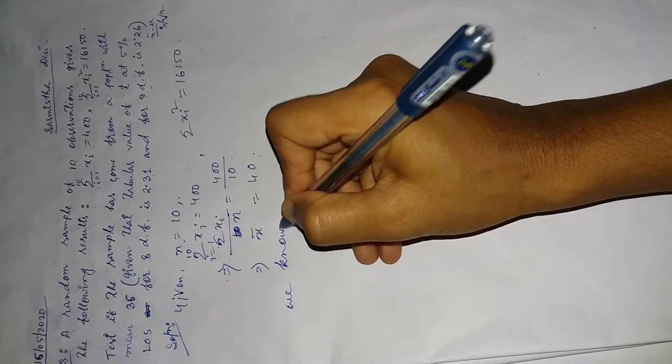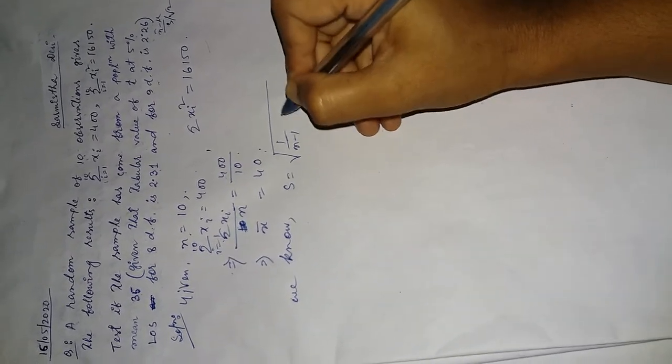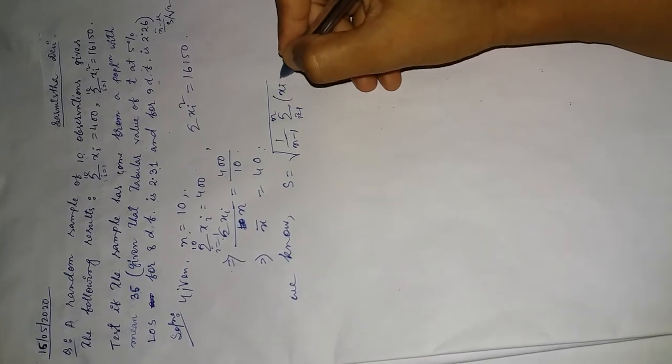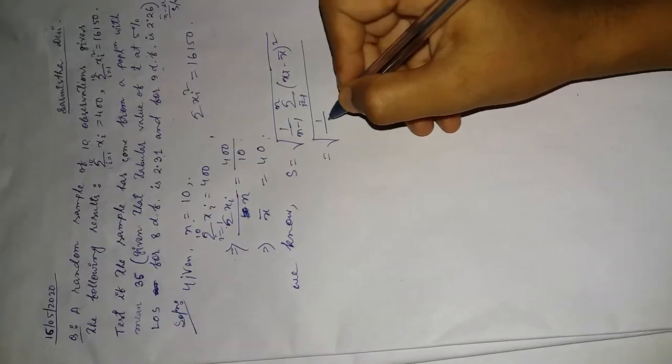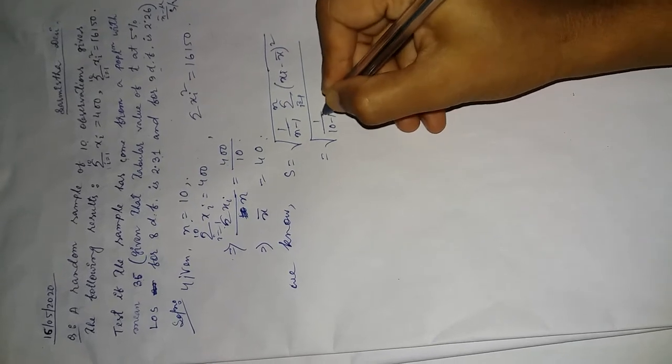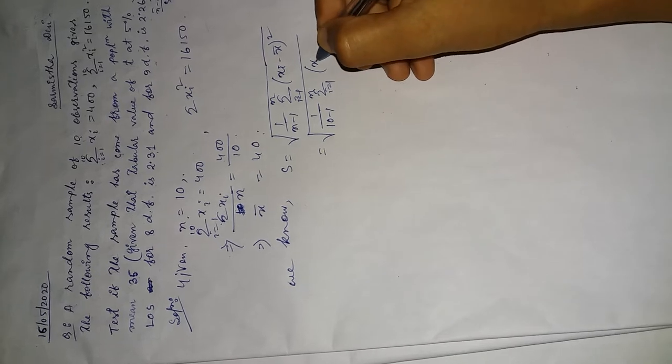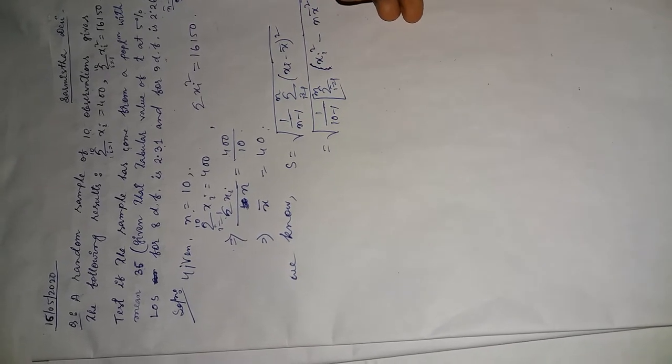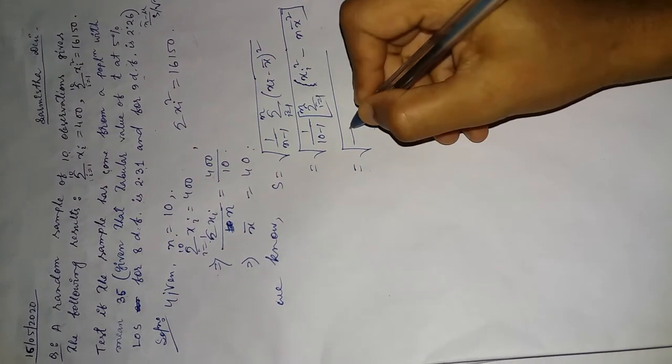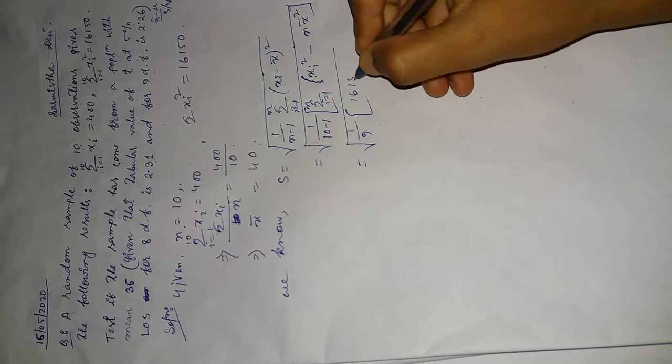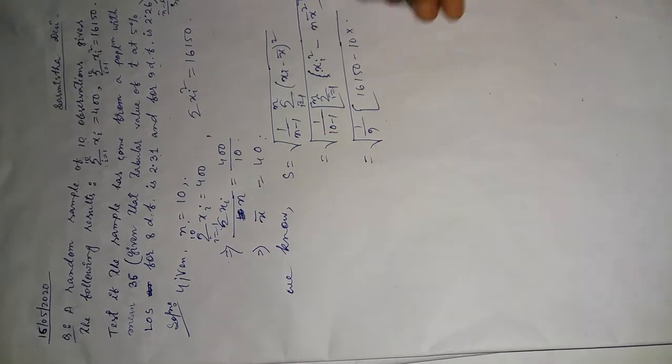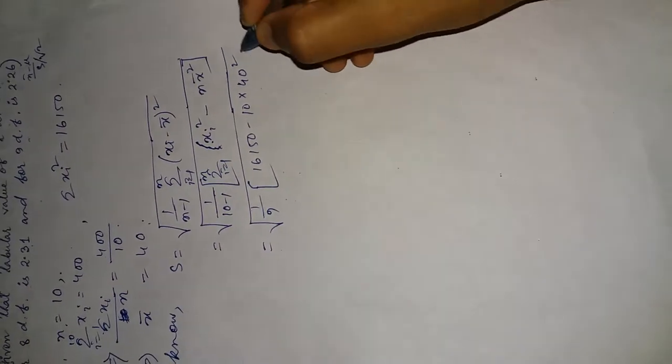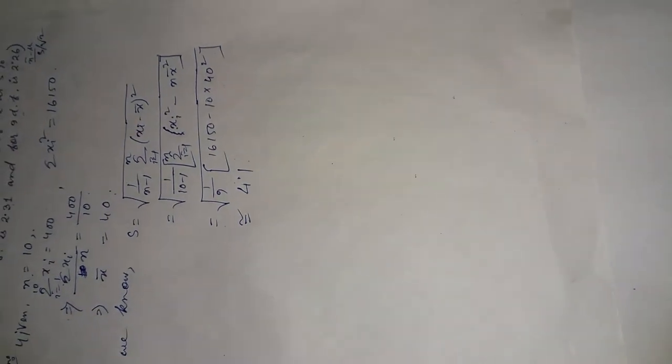We know s is equal to 1 by n minus 1 summation from 1 to n xi minus x bar whole square. We can write this formula in the modified form. Now put the values. Summation xi square is 16150 minus n which is 10, x bar whole value is 40 square. After calculation, the result is 4.1.